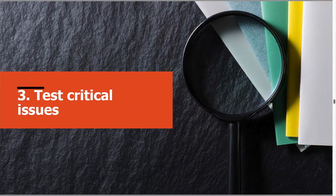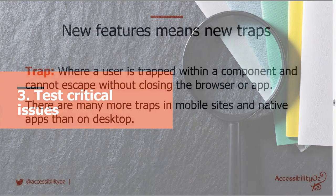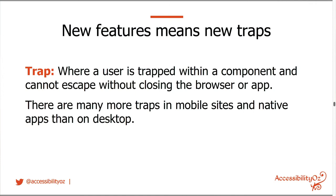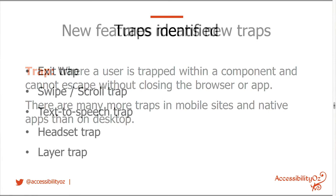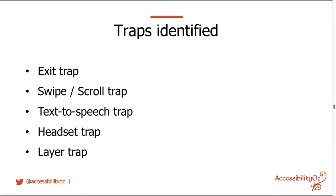Step three is test critical issues. What we've found with mobile devices is that there are a lot more traps. A trap is when a user is trapped within a component and cannot escape without closing the browser or app. There are many more traps in mobile devices. The most well-known are keyboard traps — you tab into a component like a video player and you can't tab out. We identified five traps: the exit trap, the swipe scroll trap, the text-to-speech trap, the headset trap, and the layer trap.